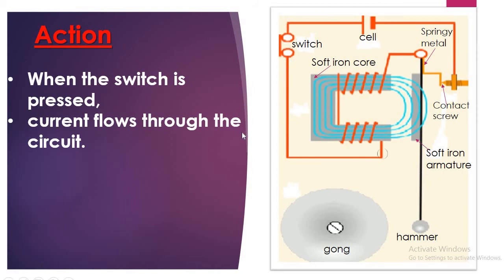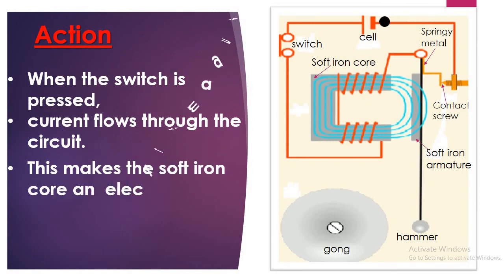Now, this makes the soft iron core an electromagnet, like I said. And these green lines represent the magnetic field pattern. This makes this end north and the upper end south. We saw that in the previous lesson.